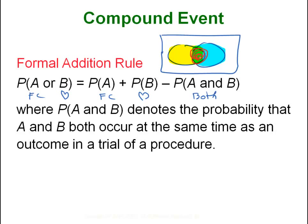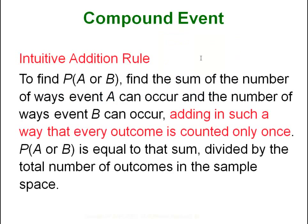The intuitive addition rule just says: make sure you add everything in a way that you count every possible outcome only once — don't forget any, and don't count any of them twice.